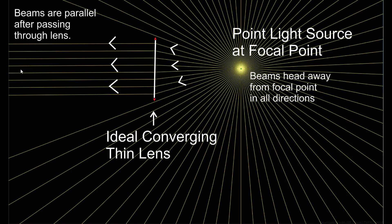Now I am taking away the parallel beam of light source and instead using a point light source. A point light source is a source where all the beams of light radiate in all directions from a single point. I am placing the point light source at the focal point of the lens. The beams of light radiating from the point light source that actually hit the lens move parallel to each other after going through the lens.